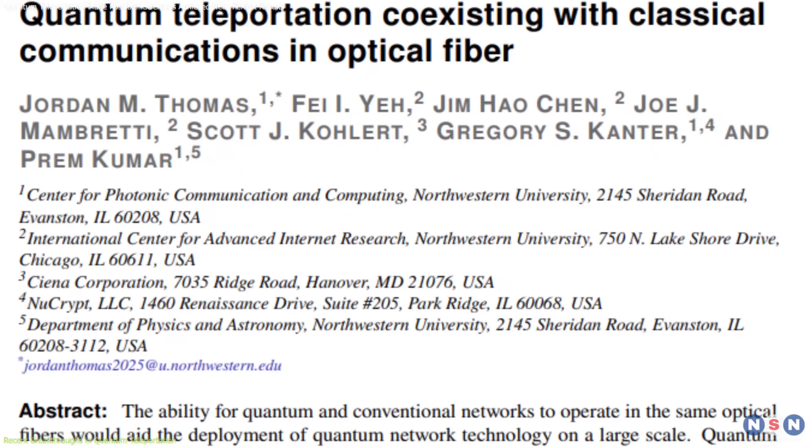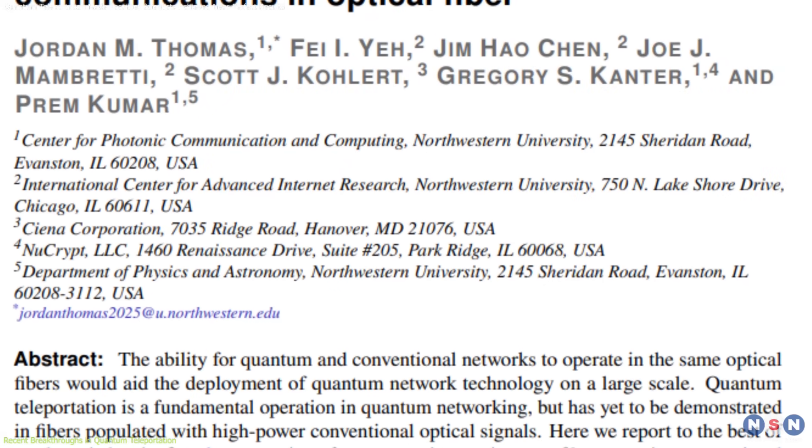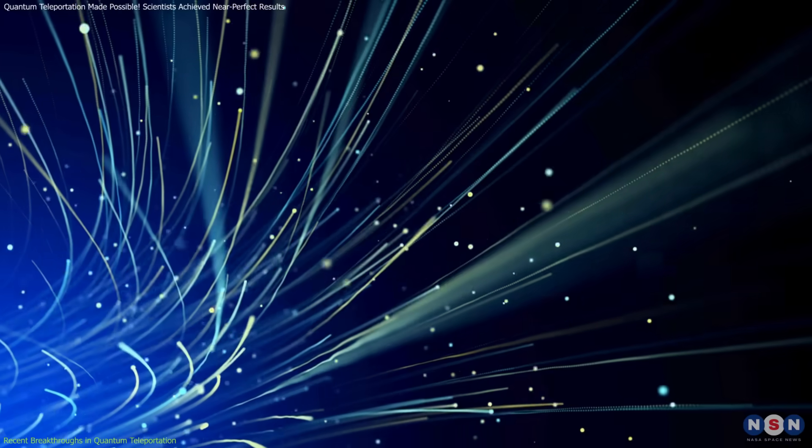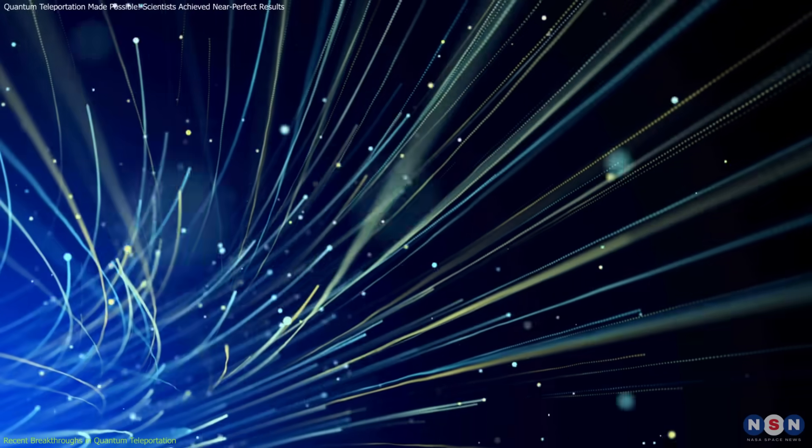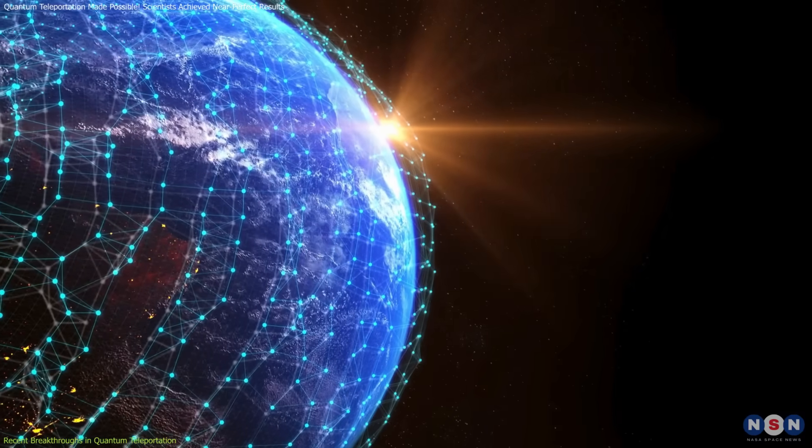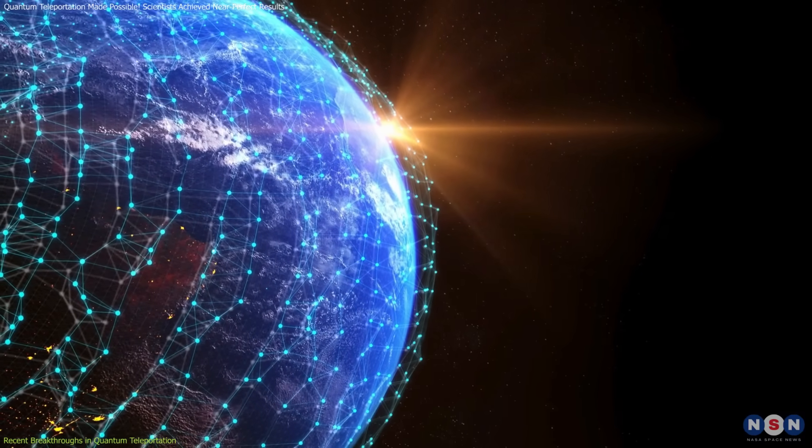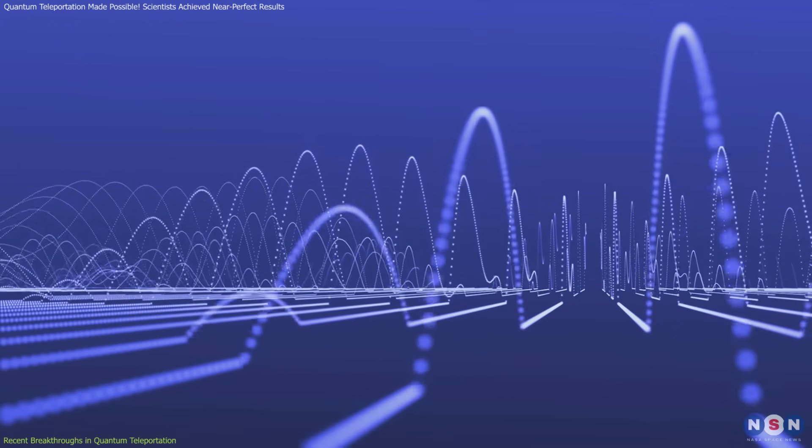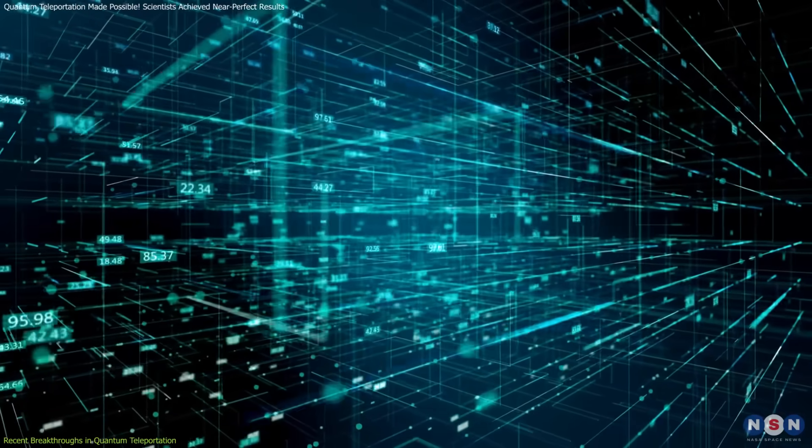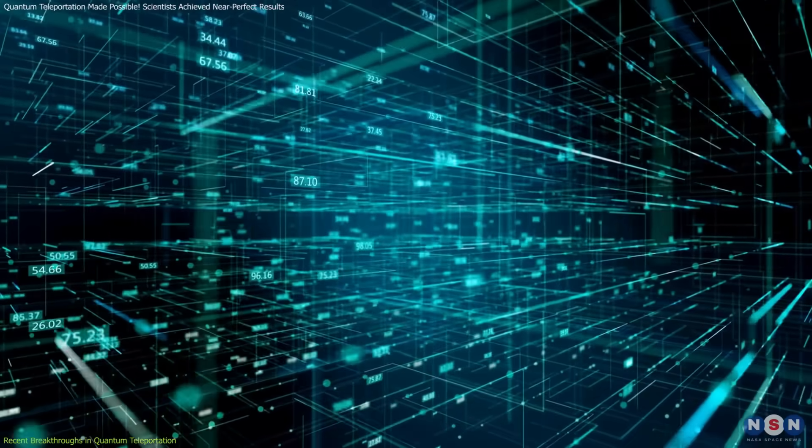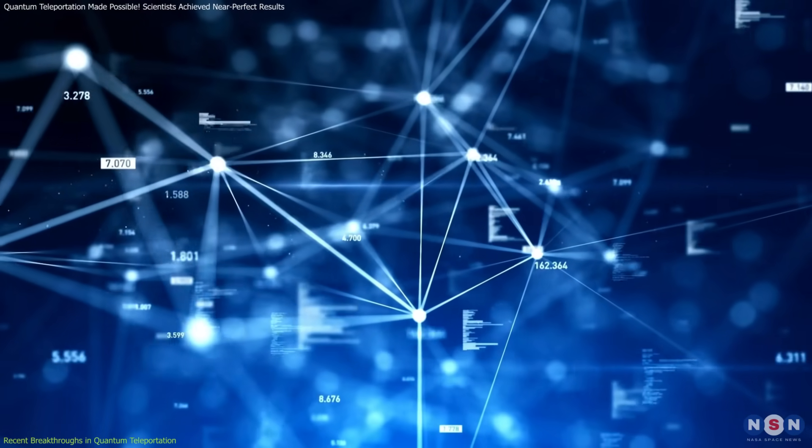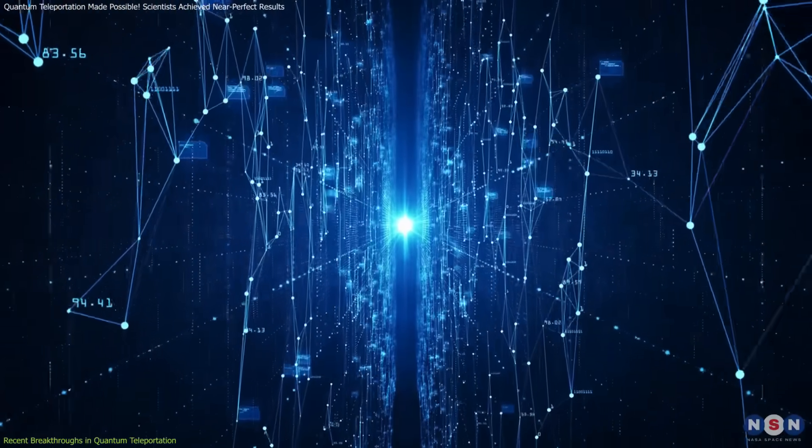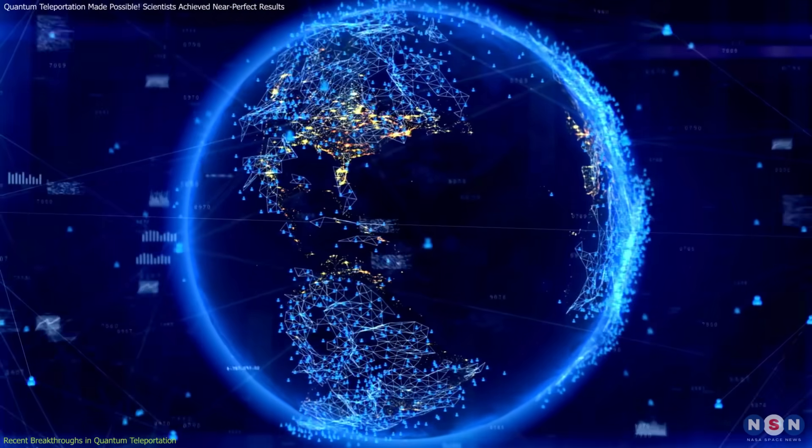In December 2024, researchers at Northwestern University successfully demonstrated quantum teleportation over a 30-kilometer fiber optic cable already carrying classical internet traffic. This experiment proved that quantum signals can co-exist with our existing communication infrastructure. By using less congested wavelengths and advanced filtering techniques, they ensured that quantum data remained undisturbed, even in a noisy environment filled with traditional data traffic. This innovation eliminates the need to build entirely new networks for quantum communication, dramatically lowering the barriers to adoption.